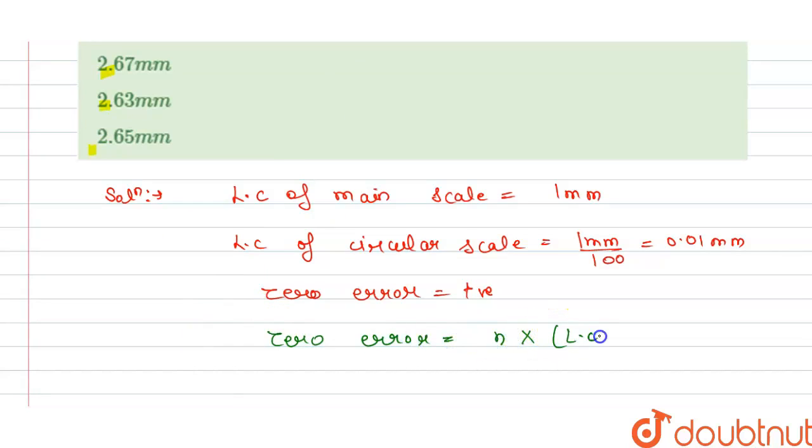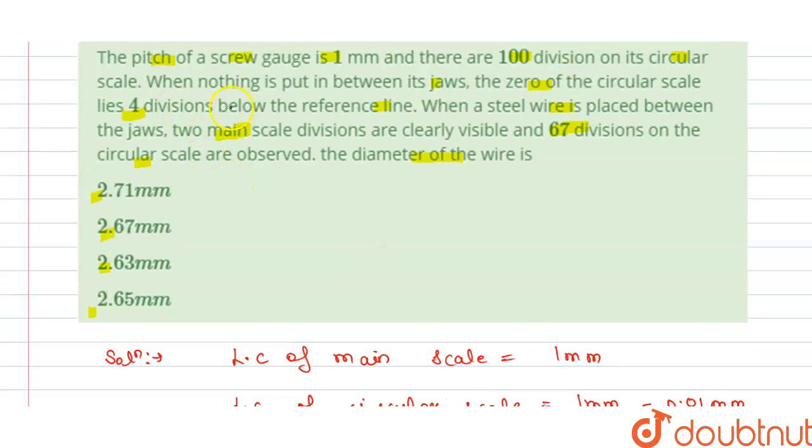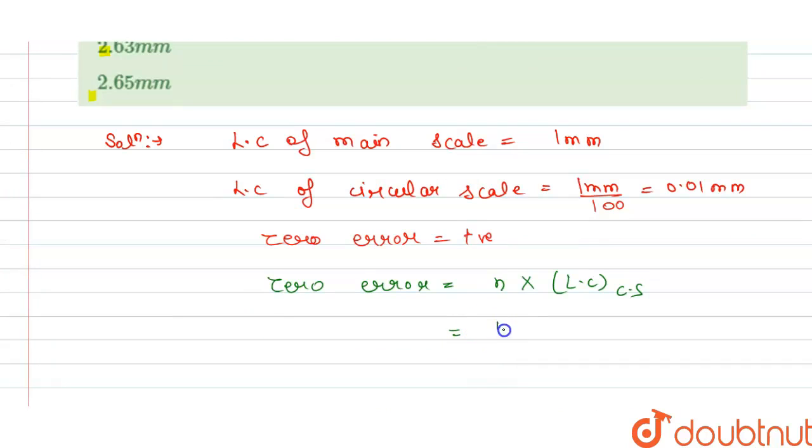So n is given to us, that are four divisions of the circular scale, and the least count is 0.01mm, so this is 0.04mm here. So this is our zero error.